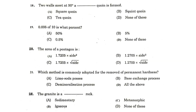When two walls meet at 90 degrees, a square quoin is formed. 0.005 of 10 is what percentage? The answer is 0.05 percent.